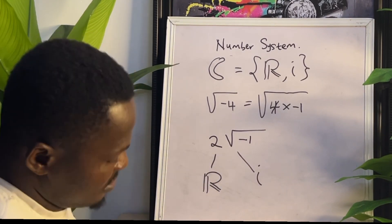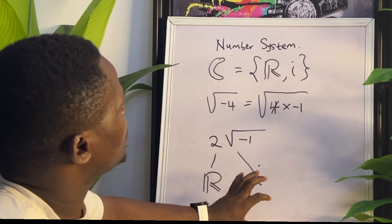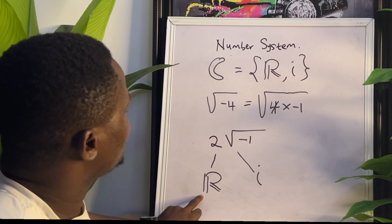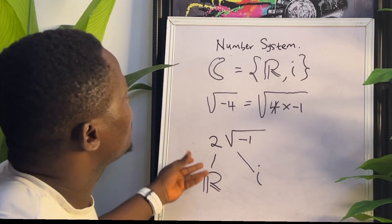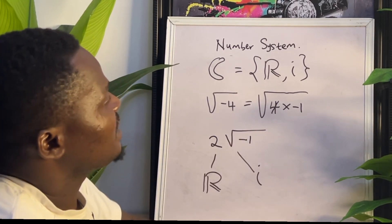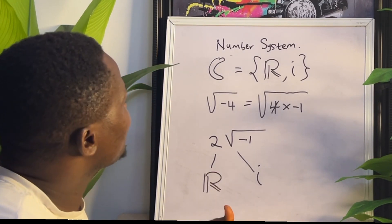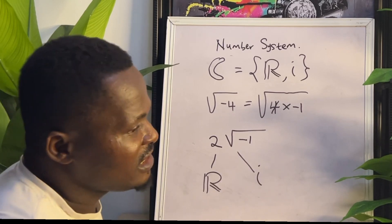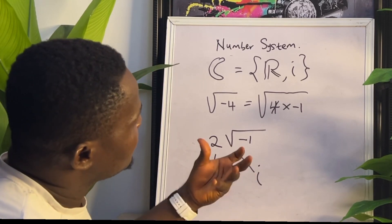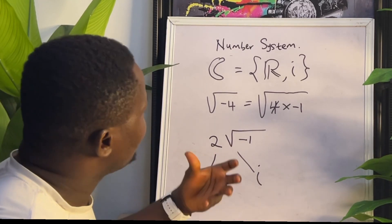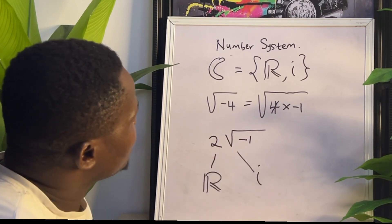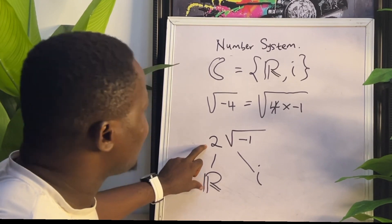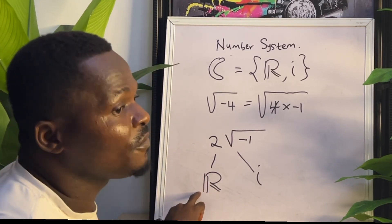The square root of minus one stands for the imaginary number, and two is a real number. Two is an even number; even numbers are found inside natural numbers; natural numbers are found inside integers; integers are found inside rational numbers; and rational numbers together with irrational numbers are found inside real numbers. Therefore, two can also be called a real number.